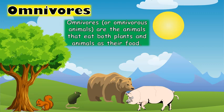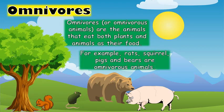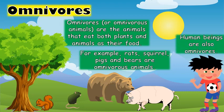Omnivores are animals that eat both plants and animals as their food. For example, rats, squirrels, pigs, and bears are omnivorous animals. Human beings are also omnivorous.